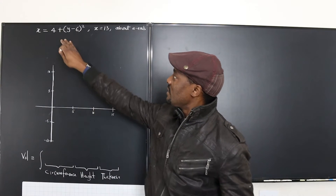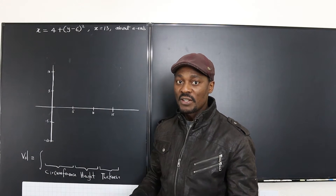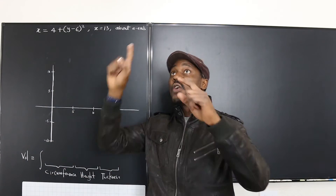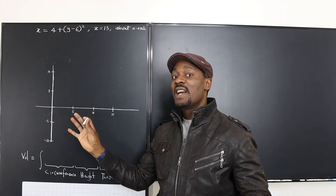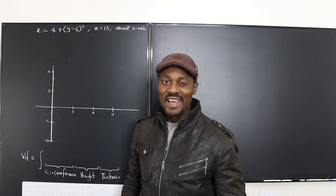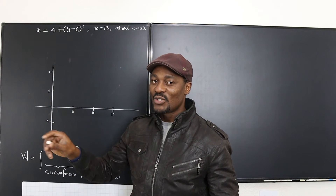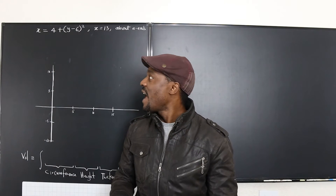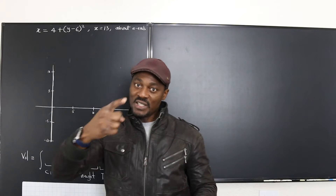If you're given this equation, you have to know that it is a parabola that opens to the right because what is squared is y. So you don't have a parabola facing up — it is facing the x direction because x is the single variable. Remember when y was the single variable, the parabola faced up. Now x is the single variable, so the parabola will be sideways.